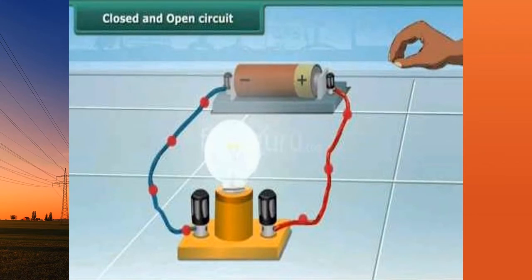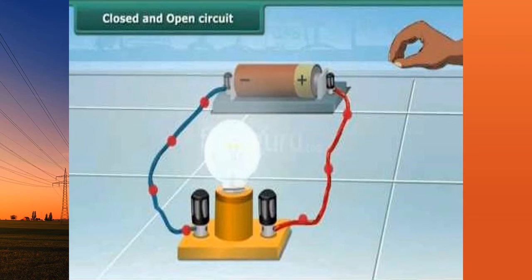Let us watch a short video clip that will demonstrate an open and closed circuit. Closed and open circuit: if you see both the wires are connected to both terminals, it is an unbroken path — it is a closed circuit. Disconnect one of the wires and you will find that the path is broken. The bulb doesn't light up since electricity can't flow through the circuit. The broken path is known as an open circuit.